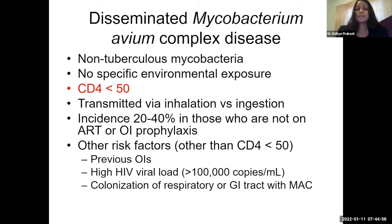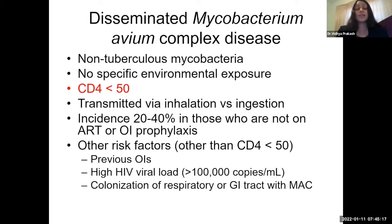Disseminated MAC is a non-tuberculous mycobacteria not associated with any specific environmental exposure — it really preys on the immunosuppressed, with CD4 less than 50. Transmitted via inhalation or ingestion, incidence is up to 40% for those not on ART or OI prophylaxis. Independent risk factors include low CD4 count, previous opportunistic infections, viral load above 100,000, or colonization in the GI or respiratory tracts.